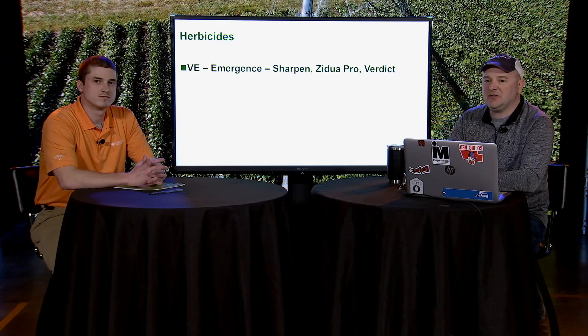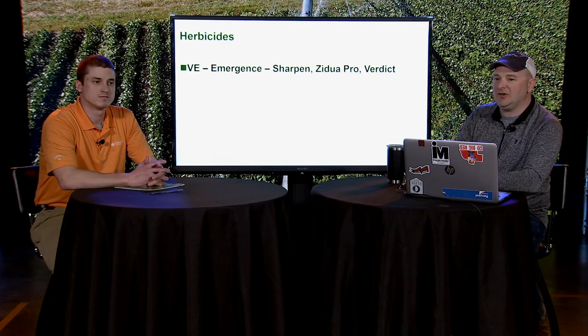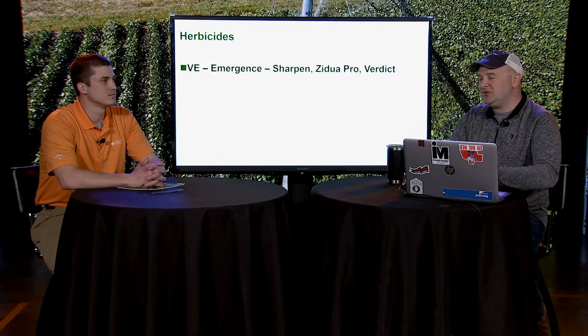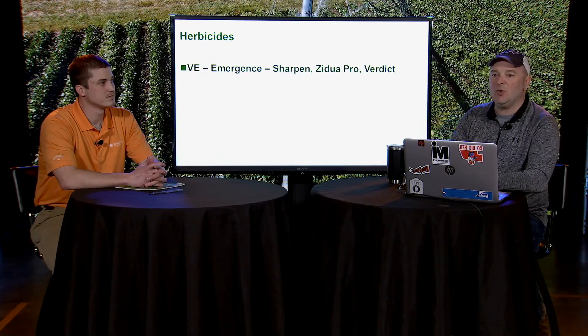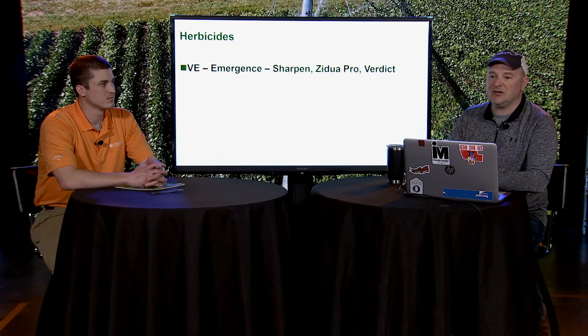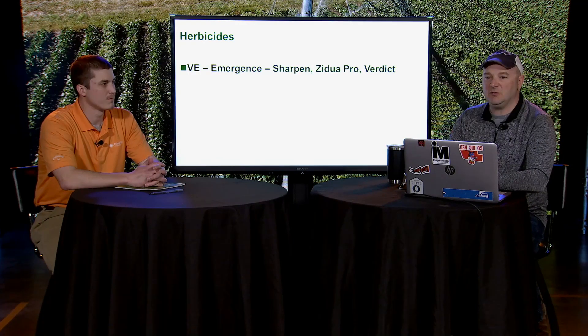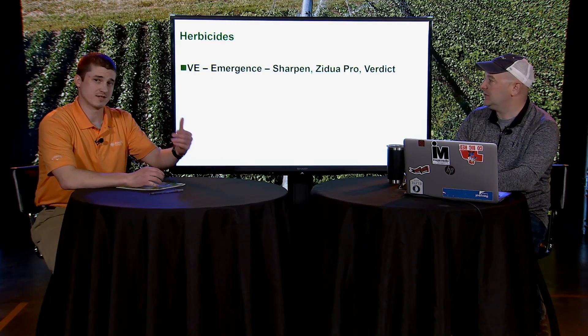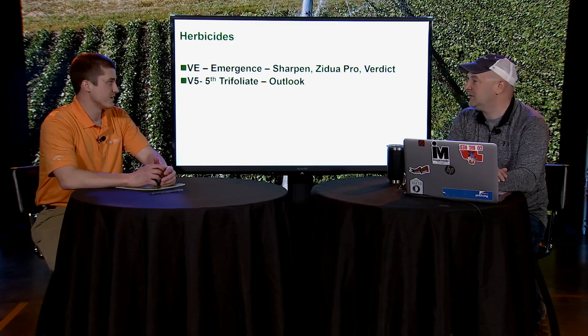Starting with emergence — some products have a cutoff once soybeans are out of the ground. There are questions about cracking and those types of things, but refer to the label for the exact specifics. Examples of products that cannot be applied once the crop has emerged or is exposed include Sharpen, Zidua Pro, Verdict, and Kixor-type products. These are designed to be used prior to soybean emergence.